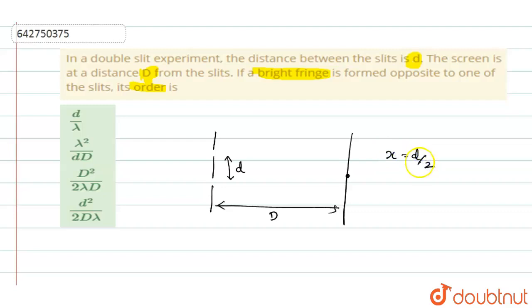That is where the bright fringe is formed. So, when you say X is equal to D by 2, the path difference equation will be, when you are supposed to find the path difference, order when you have to find, you have to find the path difference, right?